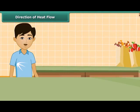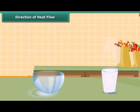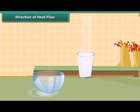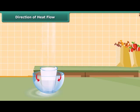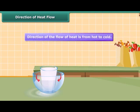Let us perform an activity to understand the concept of direction of heat flow. We place a glass of hot milk in a dish with cold water. After some time, the milk gets cooled and the water gets warm. Both milk and water come to lie at the same temperature. The direction of the flow of heat is from hot to cold.